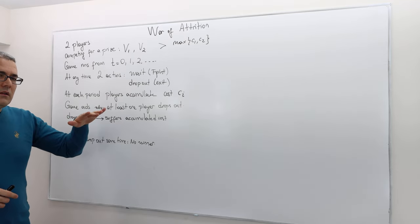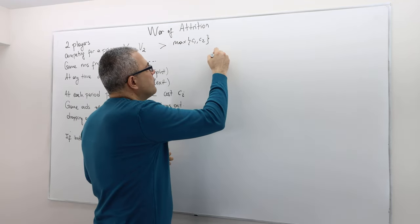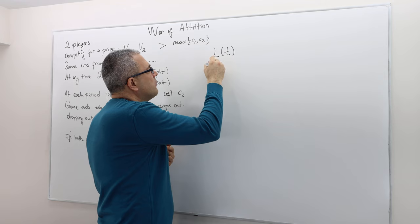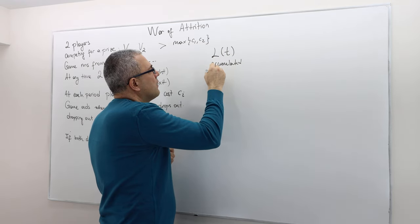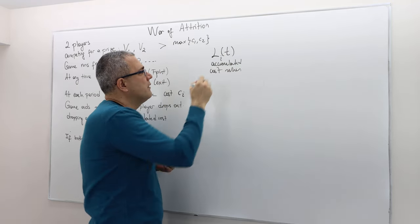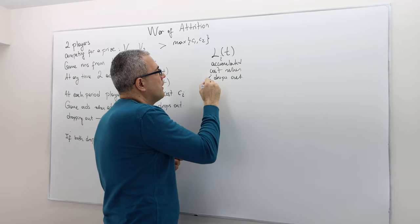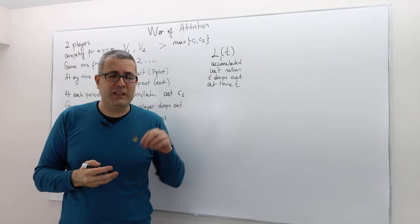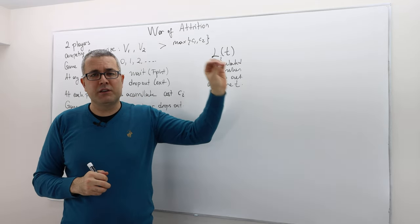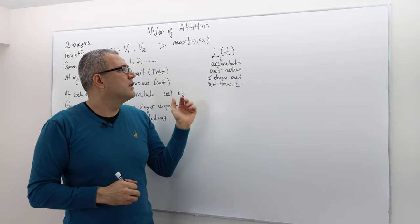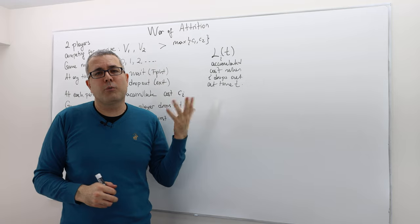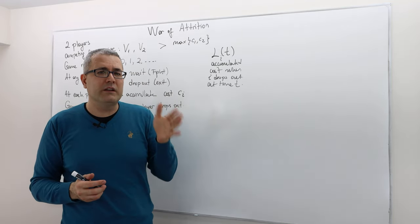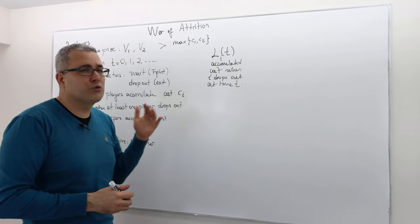Let's talk about the payoffs. I'm going to define two terms. I'll denote the first one L_i(T), which is basically the accumulated cost when player i drops out at time T. When you drop out in period T, you do not suffer cost in that period, but you suffered costs in periods 0, 1, 2, 3, all the way up to T minus 1. That's your accumulated cost — given that your opponent did not exit or drop out before this time.